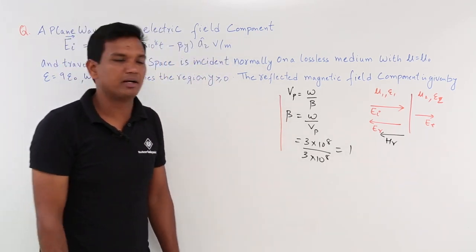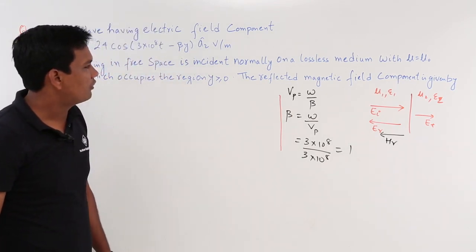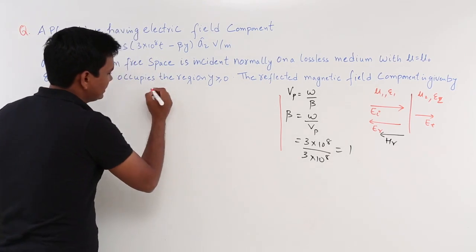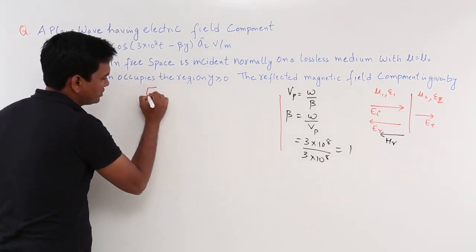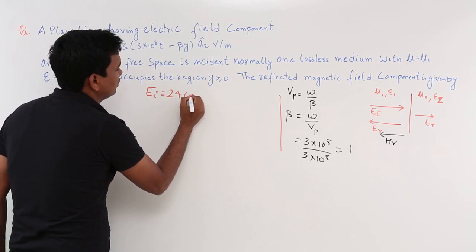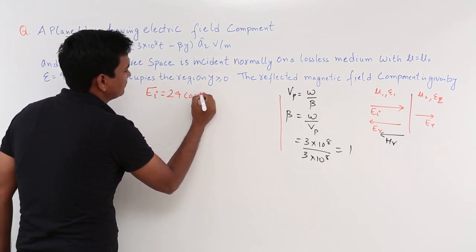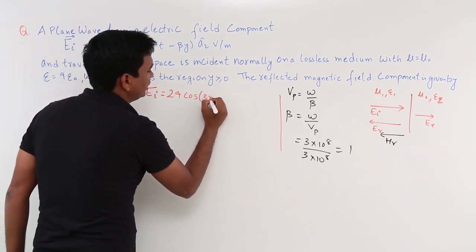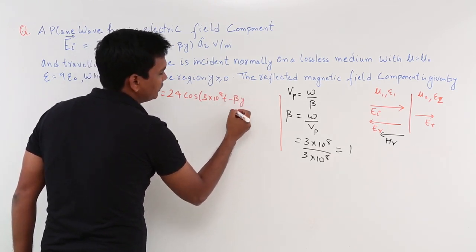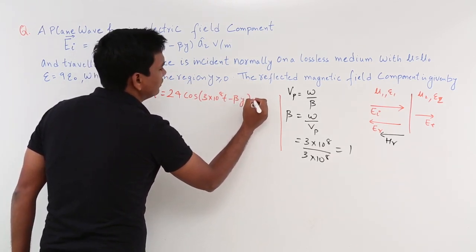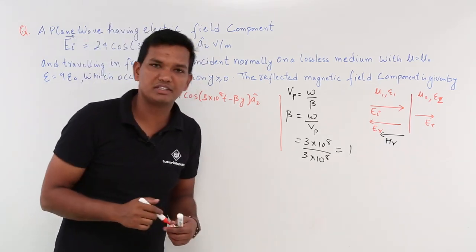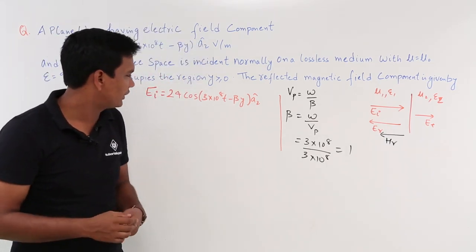Now let us write EI first. EI is given as 24cos(3×10⁸t - βy) âz, and we know that β = 1. So EI = 24cos(3×10⁸t - y) âz. This is what is given to us.